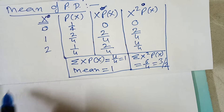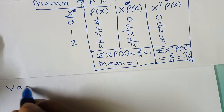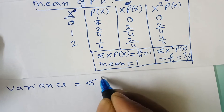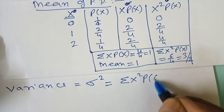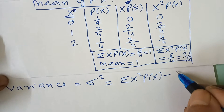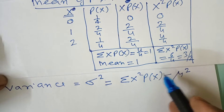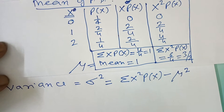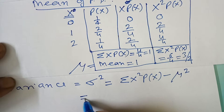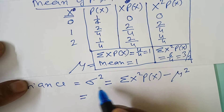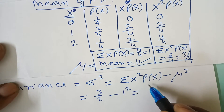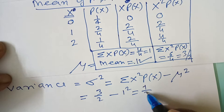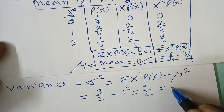Variance is denoted as sigma² and defined as: sigma² = sigma x²·P(x) − mu², where mu is the mean. So variance = (3/2) − (1)² = 3/2 − 1 = 1/2 = 0.5. This is our variance.